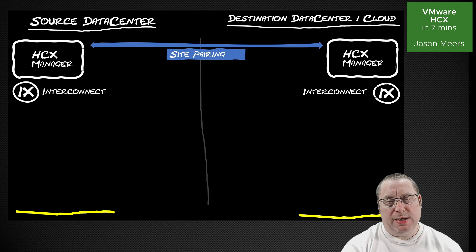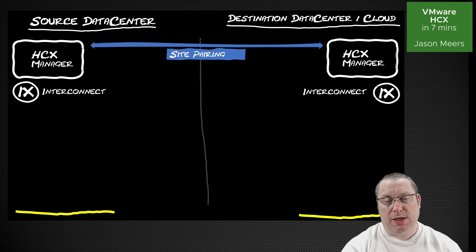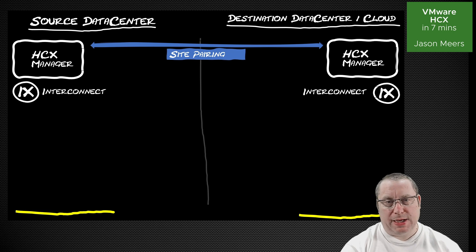The next thing we need is an interconnect, or IX. We use the HCX Manager to build something called the service mesh, of which there are three individual components. We're going to talk about the interconnect, the WAN optimizer, and then the network extension or the layer 2 extender. You build the service mesh as one task inside HCX Manager, but I'm going to talk about each component separately.